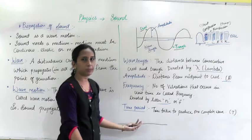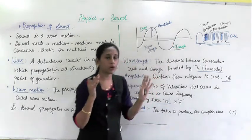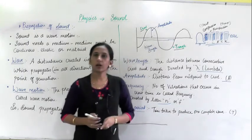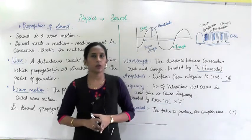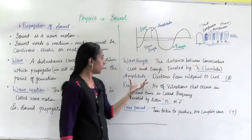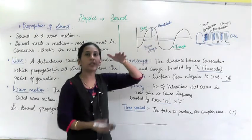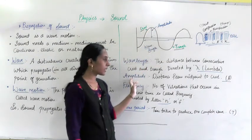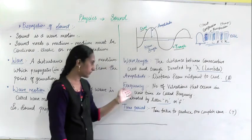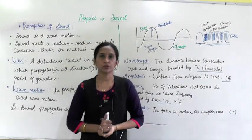Next is time period. What is time period? It is the time taken to produce one complete wave. How much time is taken to produce one wave — that is called the time period. Time period is denoted by the letter T. To summarize: wavelength is denoted by lambda and is the length of the wave. Amplitude is the distance from the midpoint to the crest or trough, denoted by A. Frequency is the number of waves produced per unit time, denoted by N or F. Time period is the time taken to complete one wave, denoted by T.